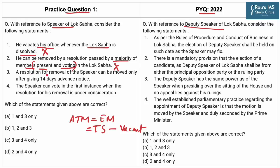Statement 3: A resolution for removal of Speaker can be moved only after 14 days of advance notice. This statement is correct. Statement 4: A Speaker can vote in the first instance when the resolution for his removal is under consideration. This statement is correct because when the resolution for removal of Speaker is under consideration, he cannot preside over the sitting of the House, although he can speak, take part in proceedings, and vote in the first instance, though he cannot cast a vote in case of equality.